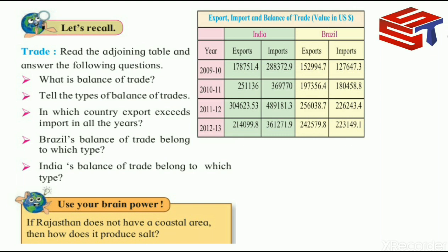India's balance of trade belongs to the deficit type — that is, an unfavorable balance of trade. So Brazil has a surplus balance of trade and India has a deficit balance of trade.